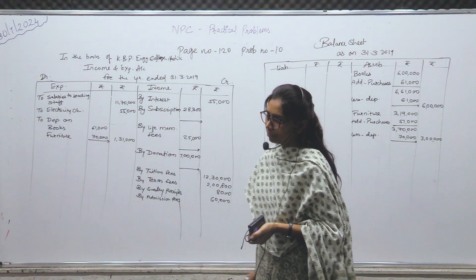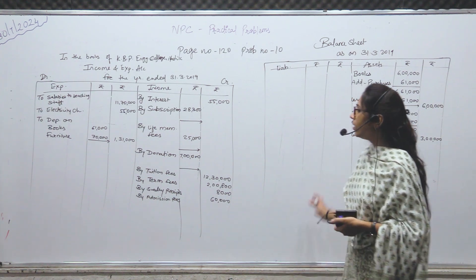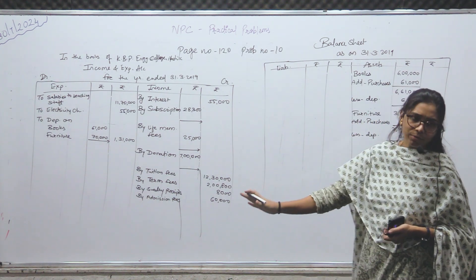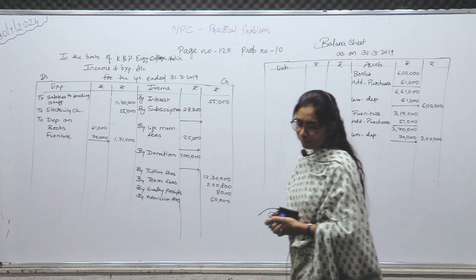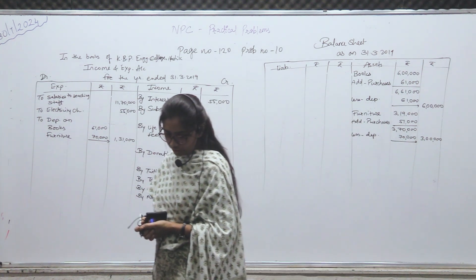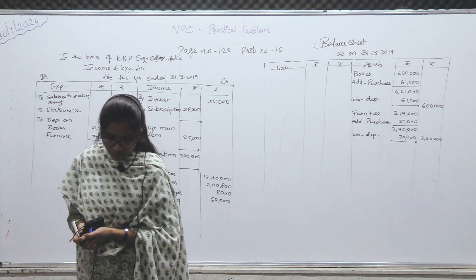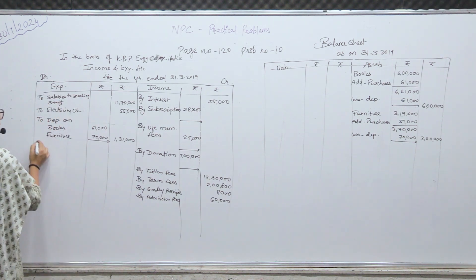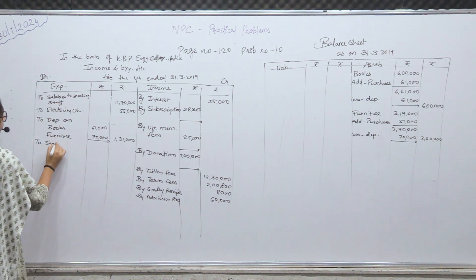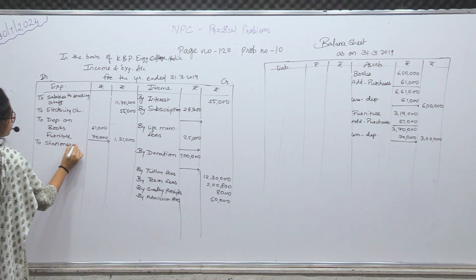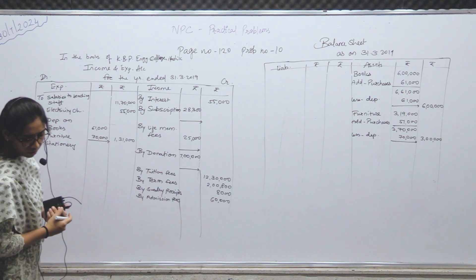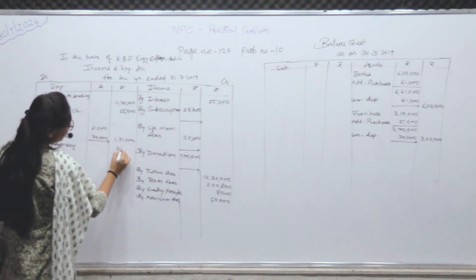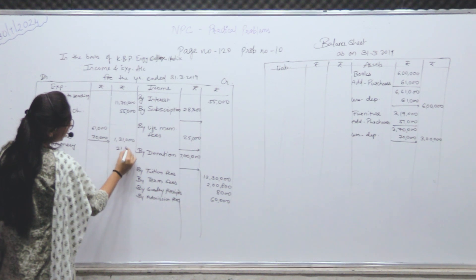Outer columns में — furniture और books की treatment हो गई। Second effect आपको depreciation का देना है expenditure side। Next — stationery — expenditure है — expenditure में लिखोगे। Amount of stationery: 21,850।